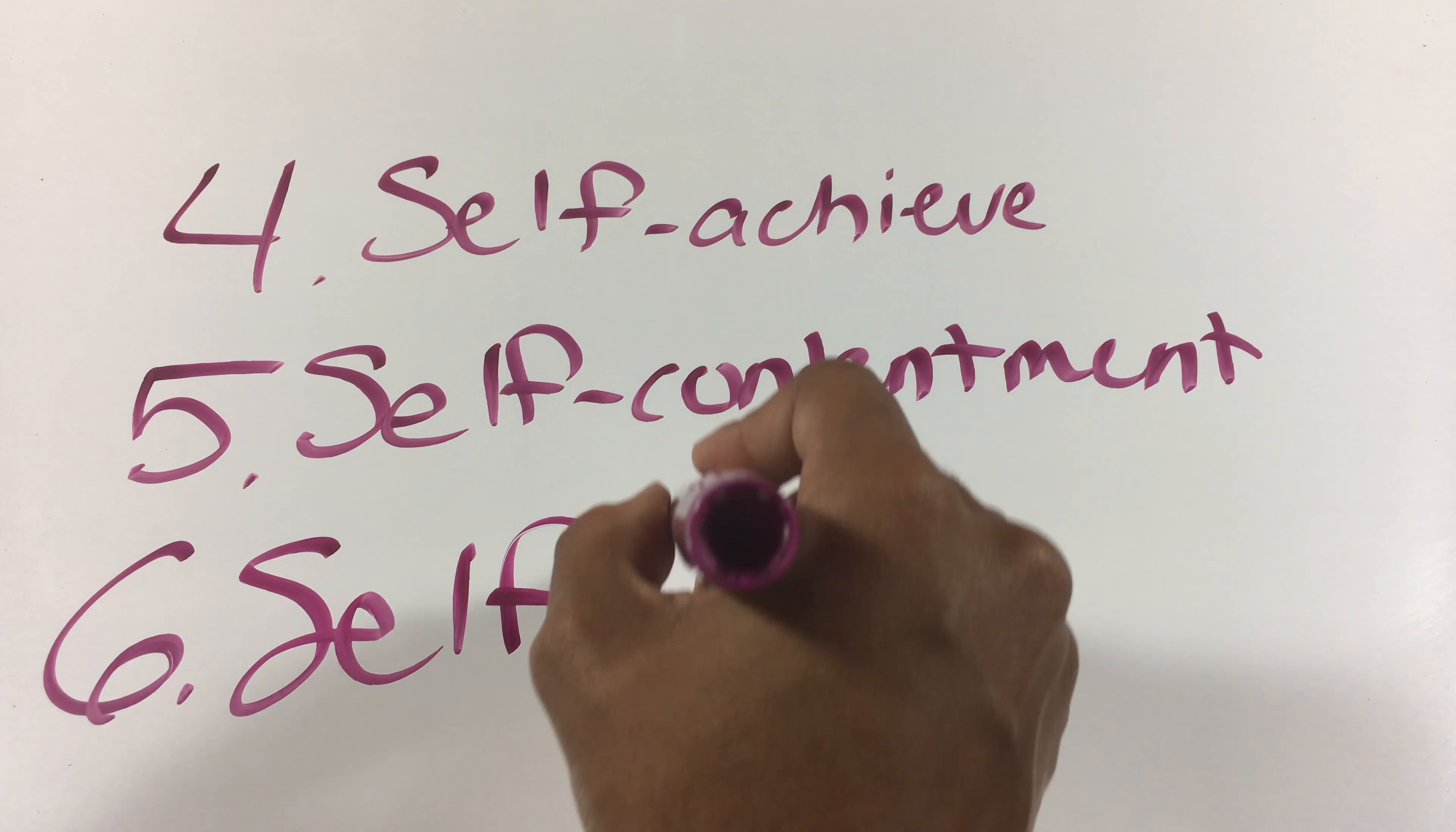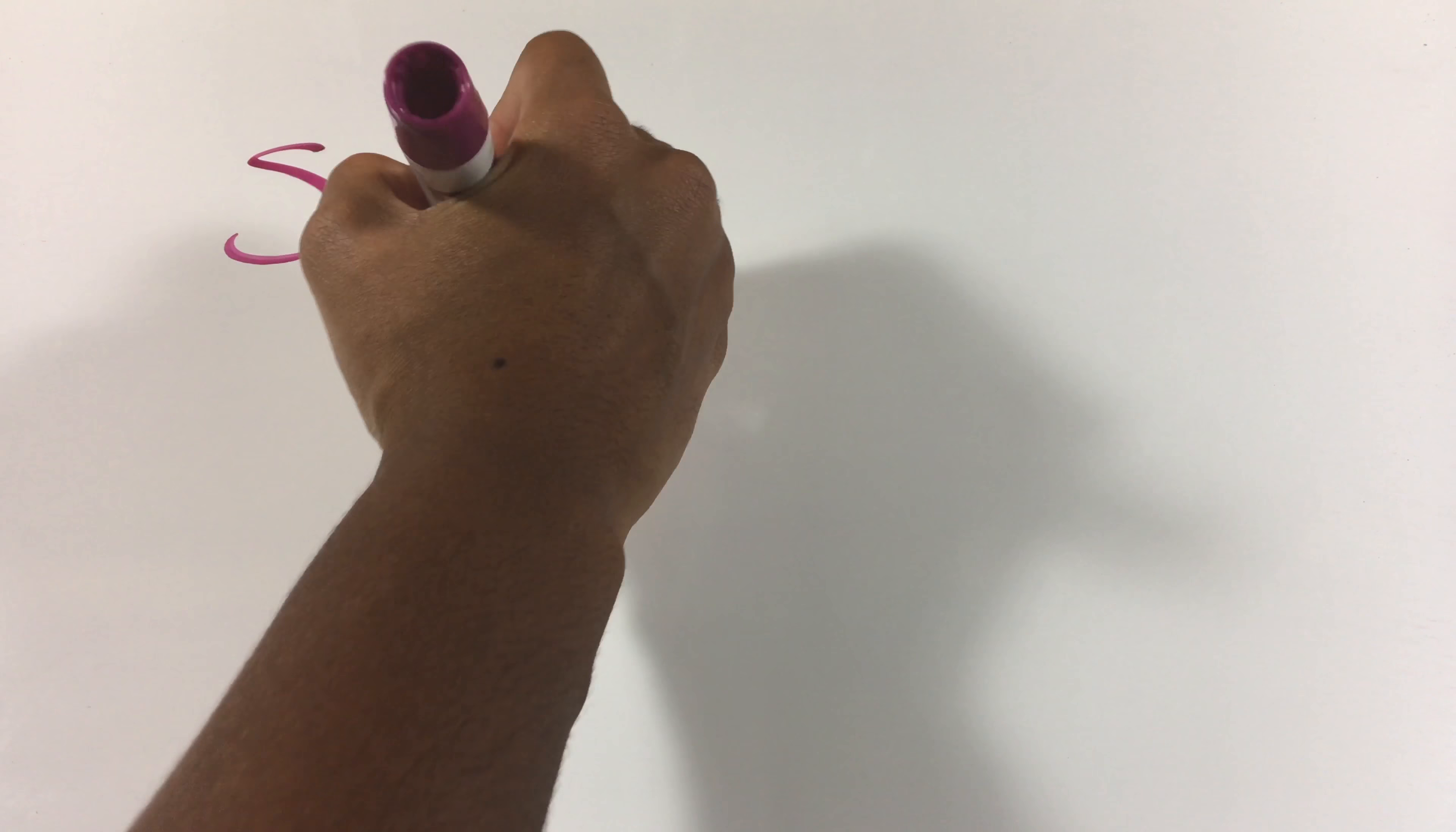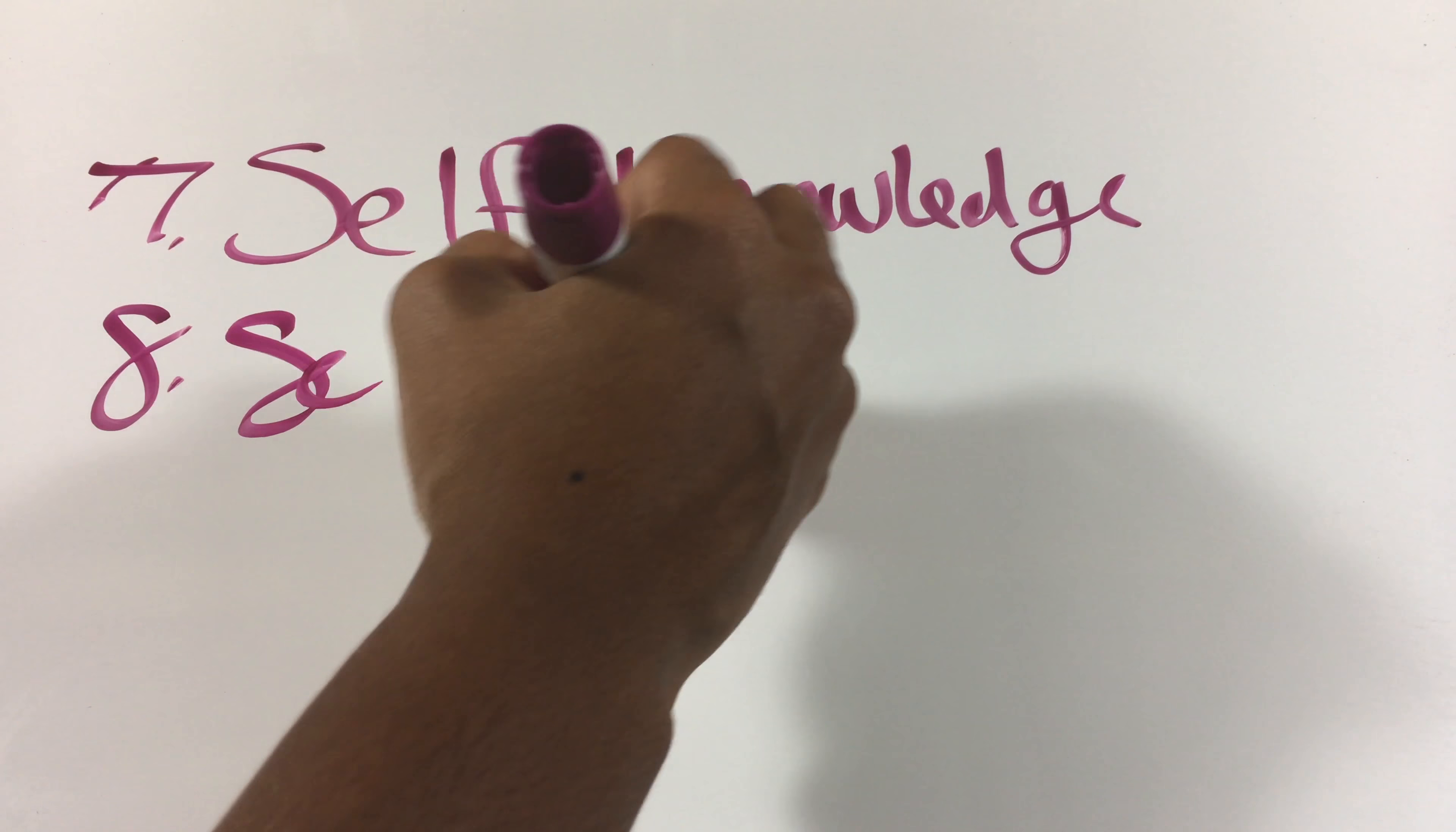The last one is self-love - you have to love what you do and love yourself. And the last four is self-knowledge - you're gonna have to know what you're doing in whatever business you're trying to accomplish.